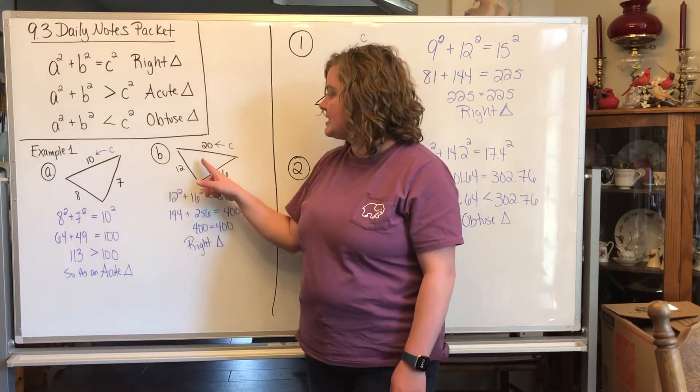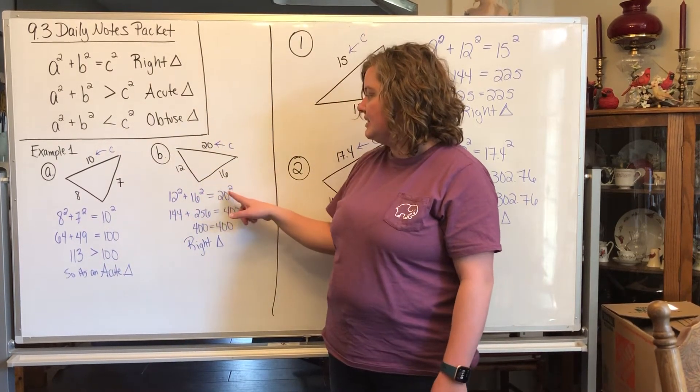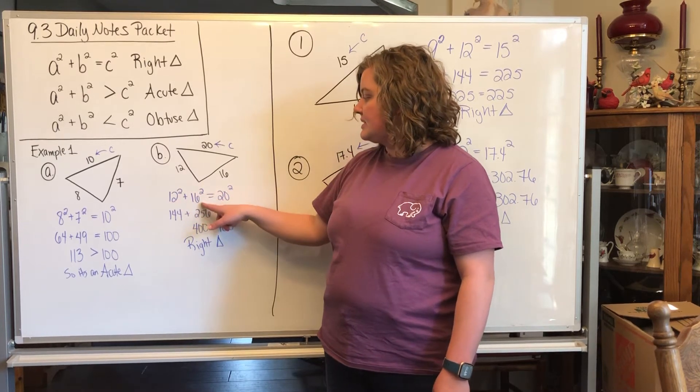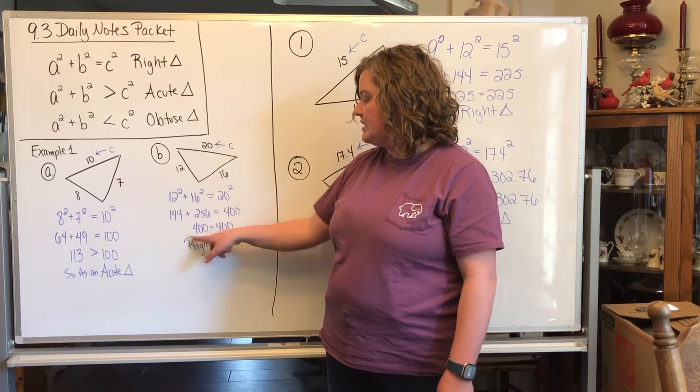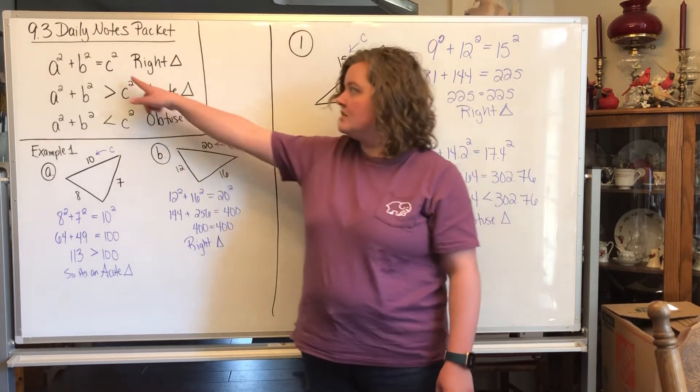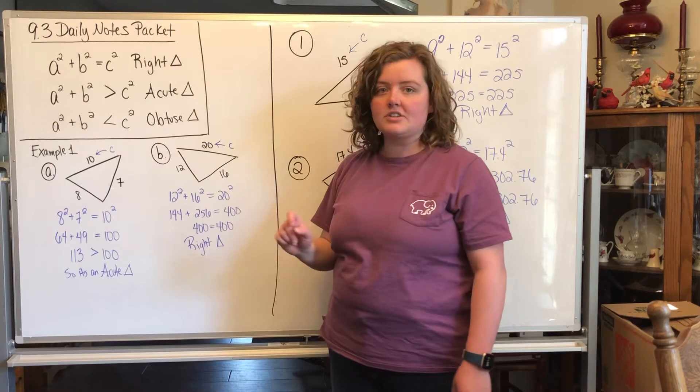In this example, the biggest number is 20, so it's going to be our c. So we do 12² + 16², and you get 400. 20² is also 400, so since it equals, it's a right triangle.